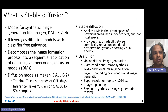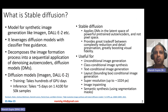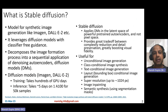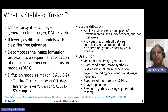Stable diffusion is a model for synthetic image generation, like other models such as Imagen, DALL-E, and so on. It leverages diffusion models with classifier-free guidance. If you want to know more details about how diffusion models work, please see one of those videos I've recorded earlier, talking about various mathematical underpinnings of diffusion models. Stable diffusion decomposes the image formation process into a sequential application of denoising autoencoders and diffusion models. Unlike previous models, which were completely diffusion models operating in the image pixel space, stable diffusion decomposes this process into two parts: denoising autoencoders and diffusion models.